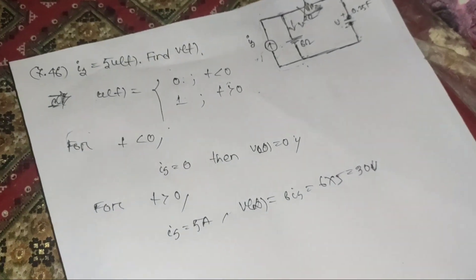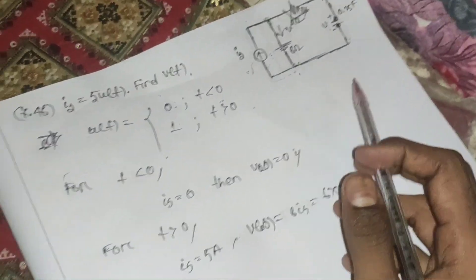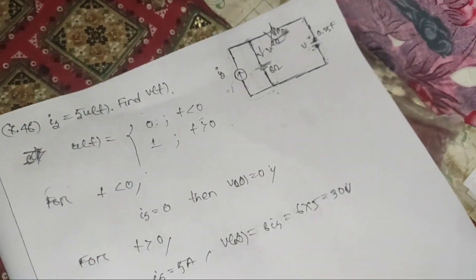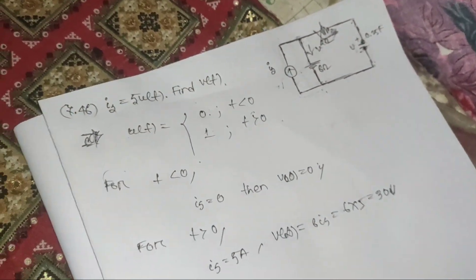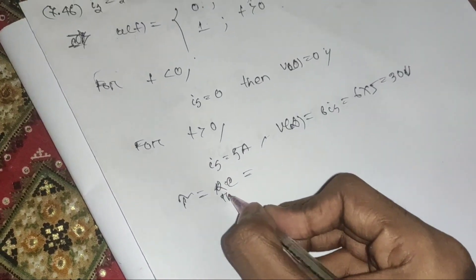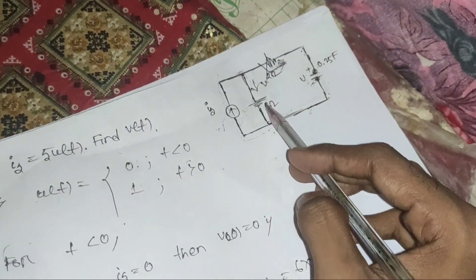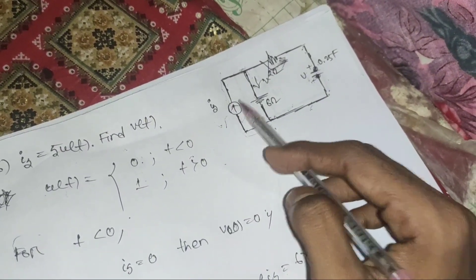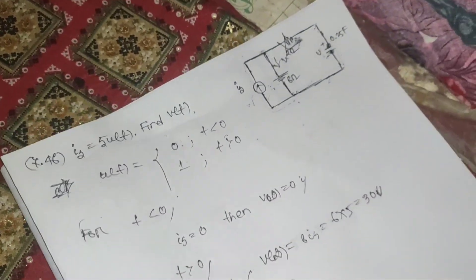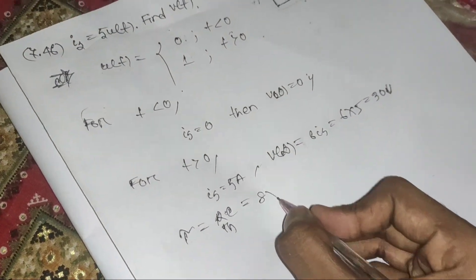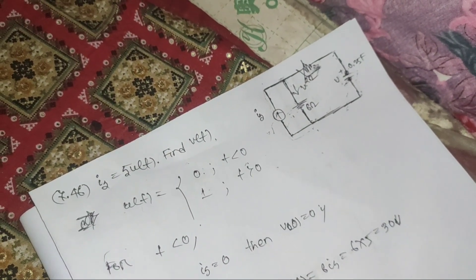Now we calculate τ. Since this is an RC circuit, τ = RC = R_Thevenin × C. To find R_Thevenin, we look at the two terminals: the 2Ω and 6Ω resistors are in series, giving R_th = 2 + 6 = 8 ohms.